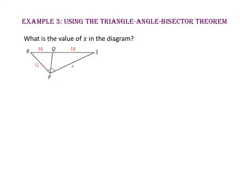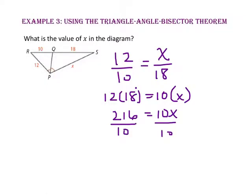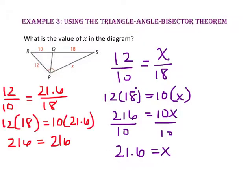In example 3, we will use the triangle angle bisector theorem to find the value of x in the diagram. Since segment PQ is the bisector of angle RPS, we know that 12 to 10 will be equal to x to 18. To solve for x, let's use the cross product property and multiply the extremes and then the means. So 216 equals 10x. Divide both sides by 10 and x equals 21.6. Let's check our solution by substituting 21.6 in for x into our original proportion. Since 216 does equal 216, we know we have the right answer.